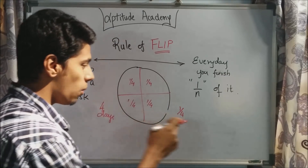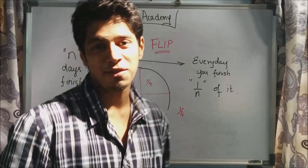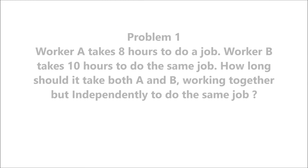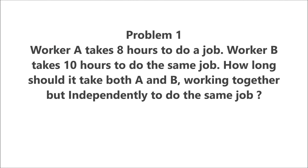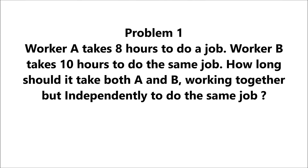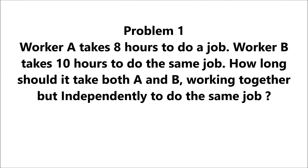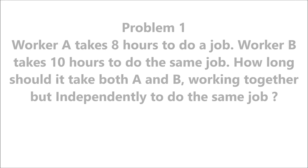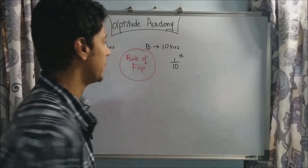So: four days → one by four; n days → one by n. Let's start solving problems. Problem one: Worker A takes eight hours to do a job, Worker B takes ten hours to do the same job. How long should it take both A and B working together but independently to do the same job? This first problem is very easy.